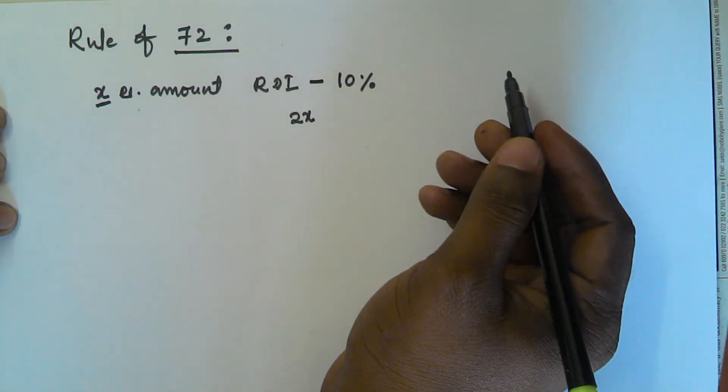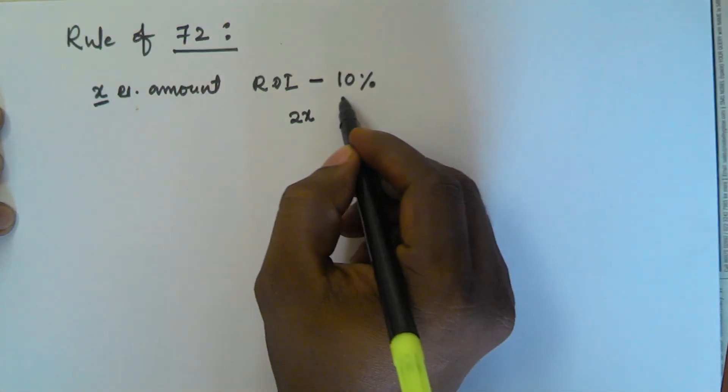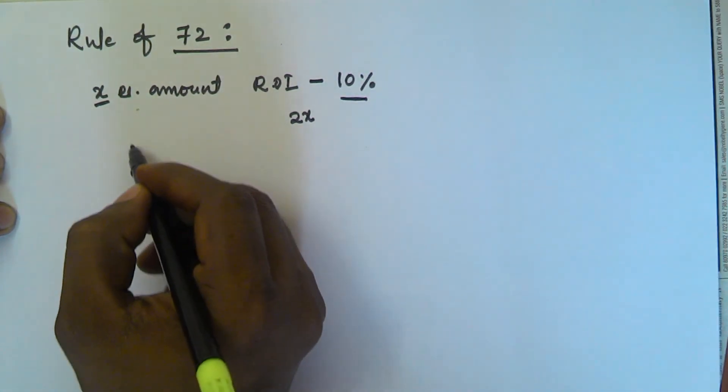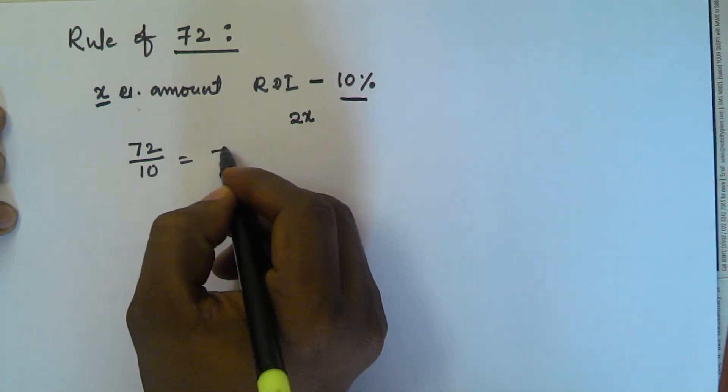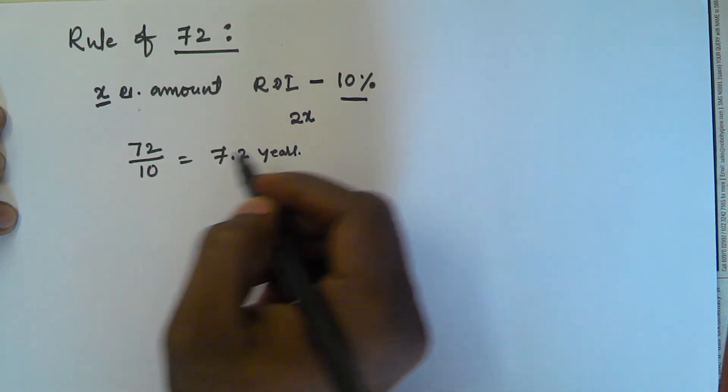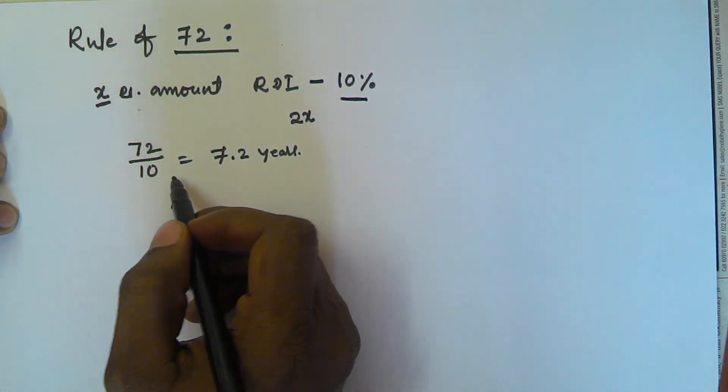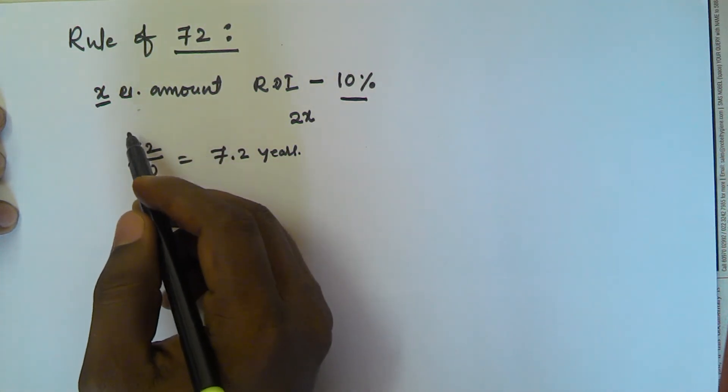To find the year, what we do we divide this 72 by rate of interest. So 72 by 10. So we are getting 7.2 years. So after 7.2 years the amount will be doubled.